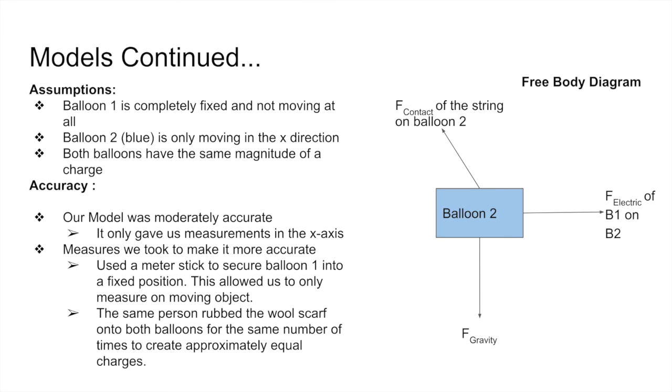Our model was moderately accurate because it only gave us measurements in the x direction, and we did not consider the y or z direction. Measures we took to make it more accurate were that we used a meter stick to secure balloon 1 into a fixed position. This allowed us to only measure one moving object in one angle. The same person rubbed the wool scarf onto both the balloons for the same number of times to create approximately equal charges on each balloon and for each trial.